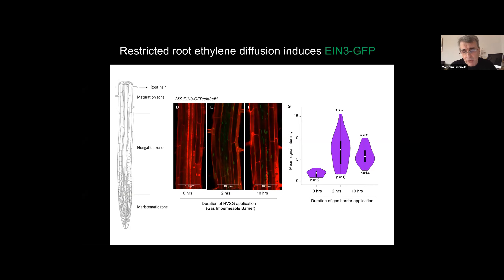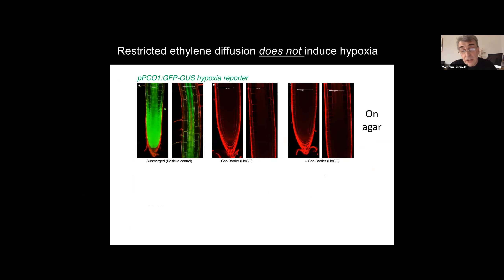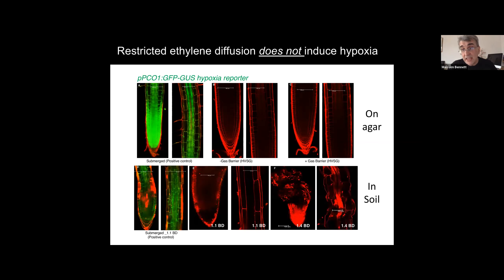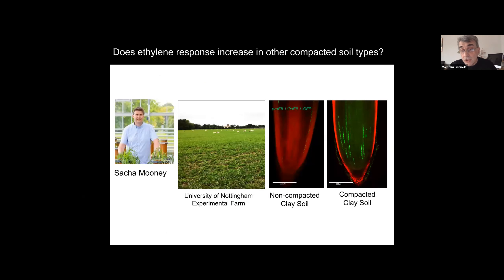Many people asked whether covering with a gas impermeable barrier could create a hypoxia response. We used a number of different hypoxia markers — for example PCO1 — which you can induce nicely by submerging the plant to hypoxia conditions, but if you cover it with a gas barrier, you do not induce it. We tested this on agar and repeated it in soil, and under neither compacted nor non-compacted conditions can we induce the hypoxia marker. However, we can induce it if we submerge the roots. So the ethylene response we are seeing is completely different from a hypoxia response.